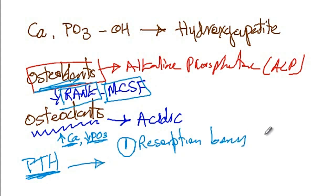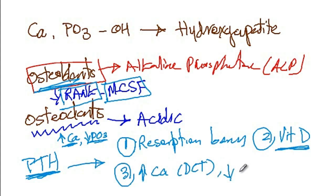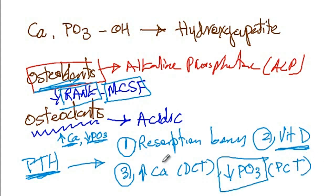In addition, parathyroid hormone induces the activation of vitamin D, and vitamin D increases the absorption of calcium as well as phosphate from the gut. Finally, parathyroid hormone works on the renal tubules to increase calcium absorption in the distal convoluted tubule, but decreases phosphate reabsorption in the proximal convoluted tubule. Overall, all of these effects combined result in elevated calcium but low phosphate concentration in the serum.